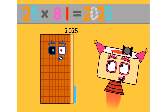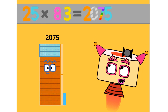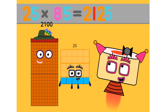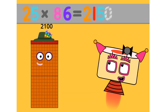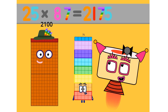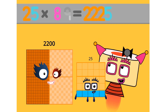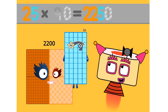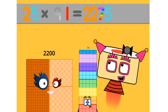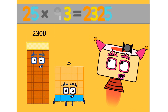25 times 81 equals 2025. 25 times 82 equals 2050. 25 times 83 equals 2075. 25 times 85 equals 2125. 25 times 86 equals 2150. 25 times 87 equals 2175. 25 times 88 equals 2200. 25 times 89 equals 2225. 25 times 90 equals 2250. 25 times 91 equals 2275. 25 times 92 equals 2300.